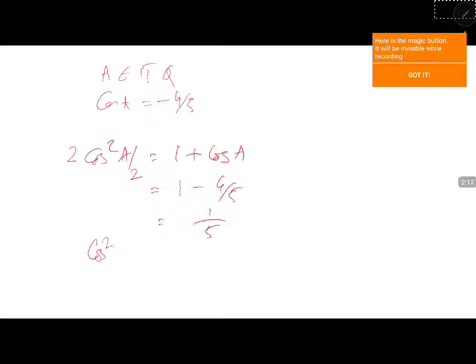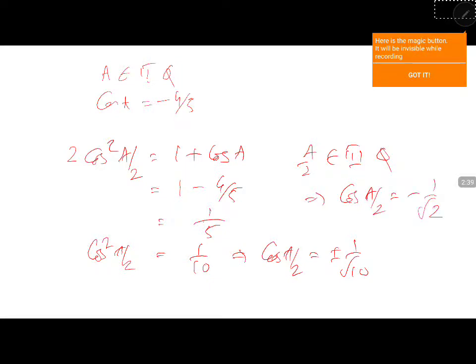Now cos square a/2 is equal to 1/10, which implies cos a/2 is equal to plus or minus 1 by root 10. But a/2 belongs to third quadrant, that implies cos a/2 is equal to minus 1 by root 10.